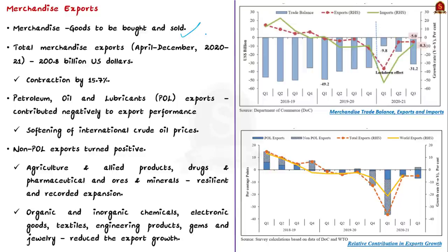According to the Economic Survey, the total merchandise exports during April-December 2020 amounted to $200 billion, a contraction of 15%. The petroleum, oil, and lubricants exports — POL exports — constitute about 10 to 15% of total merchandise exports of our country and contributed negatively to export performance during this period. The fall in POL exports was largely driven by the softening of international crude prices.